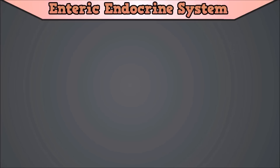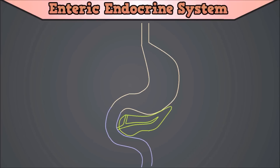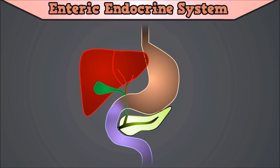Now you know the basics, let's have a look at the various roles of the aforementioned main hormones. On this picture you can see a basic overview of the different parts of the gut that we will be talking about: the esophagus, the stomach, duodenum, jejunum, liver, gallbladder, and the pancreas.